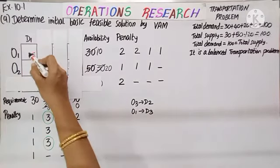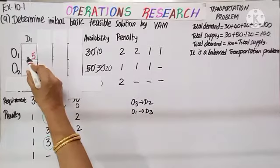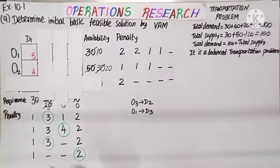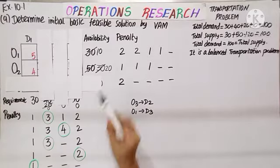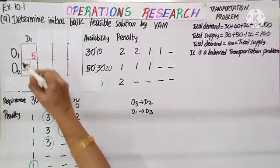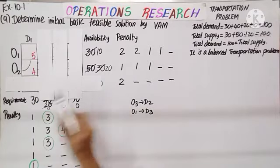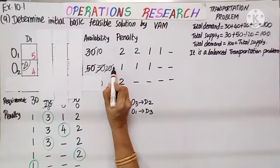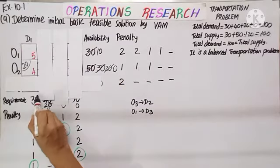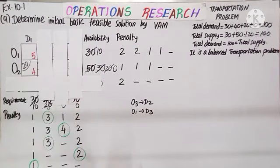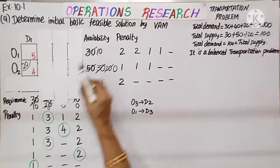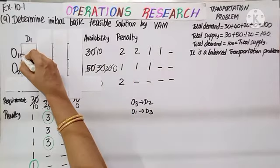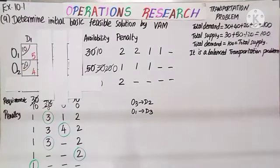We are left with 2 cells. O1 has only 1 cell so no penalty. O2 row: 5 minus 4 is 1. Only column D1 remains. The minimum cost cell is 4. Supply is 20 and demand is 30 — minimum is 20, so we allocate 20. This becomes 0, and demand becomes 30 minus 20, which is 10. Then 10 remains here and also 10 there, so we fill 10 in the last cell.